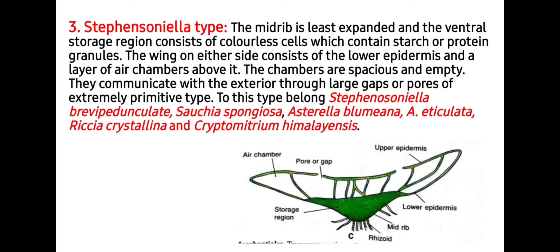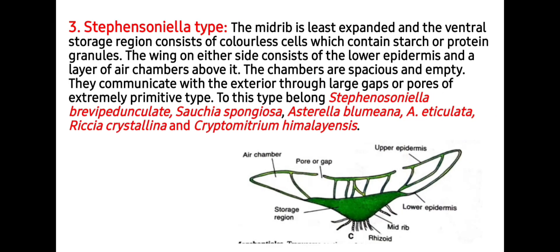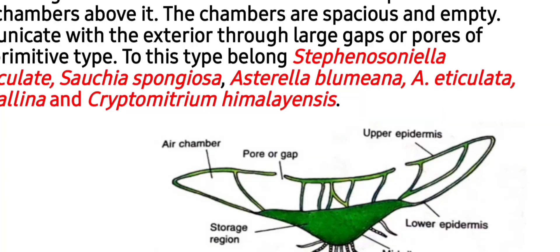The third and last category is Stephanosomella type. The midrib is least expanded and the ventral storage region consists of colorless cells containing starch or protein granules. The wings on either side consist of lower epidermis and a layer of air chambers above it. The chambers are spacious and empty. They communicate with the exterior through large gaps or pores of extremely primitive type.